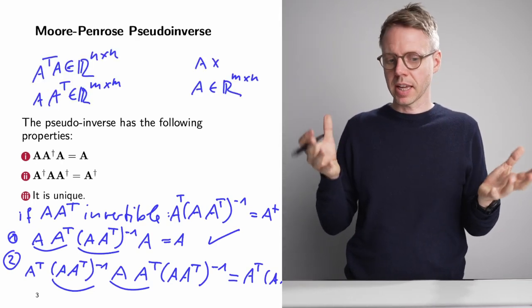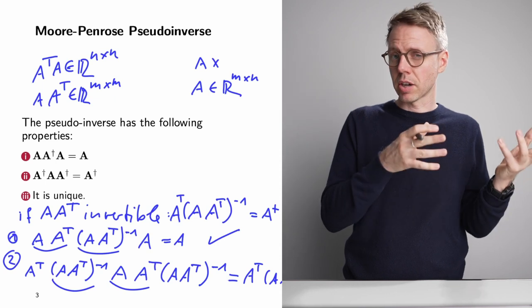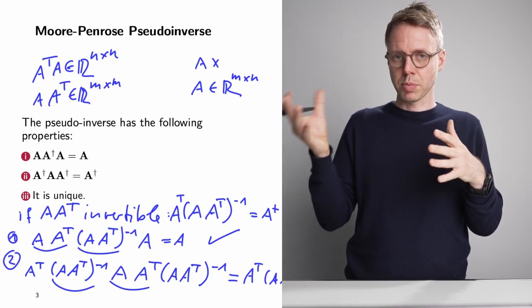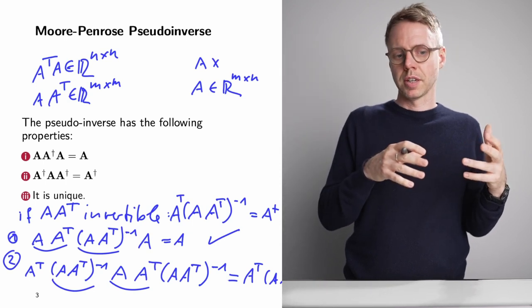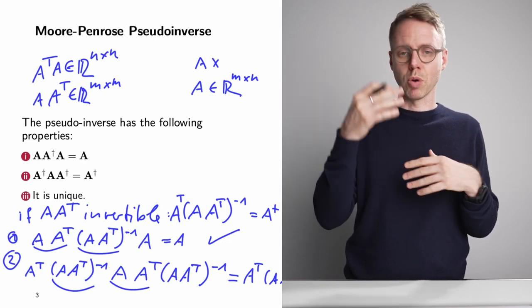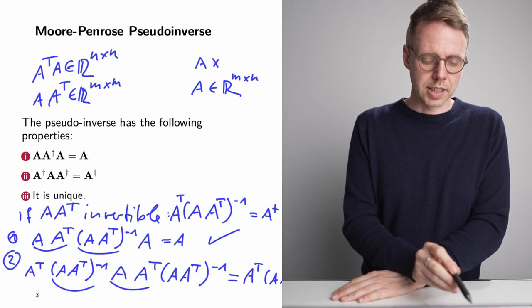What about the case where the rank of A is R, which is smaller than both M and N? In this case we so far don't have a Moore-Penrose pseudoinverse. Can we still get one? The answer is yes, and I will show you soon. But let's first look again at the singular value decomposition of A.